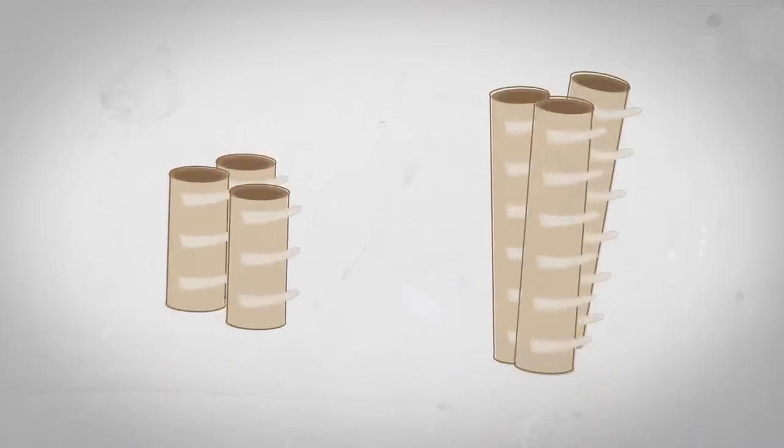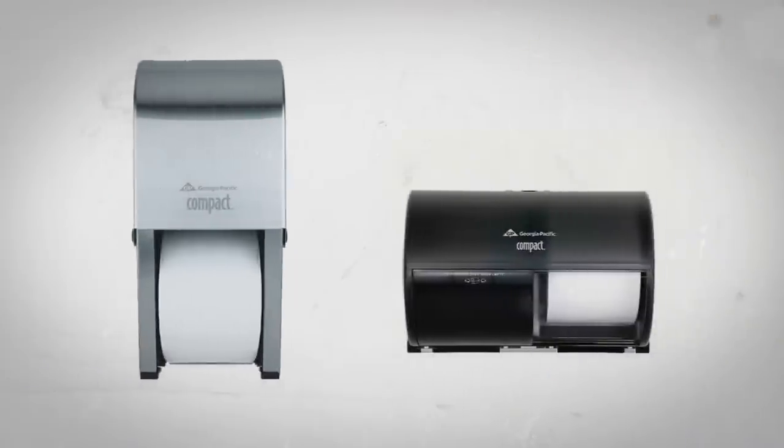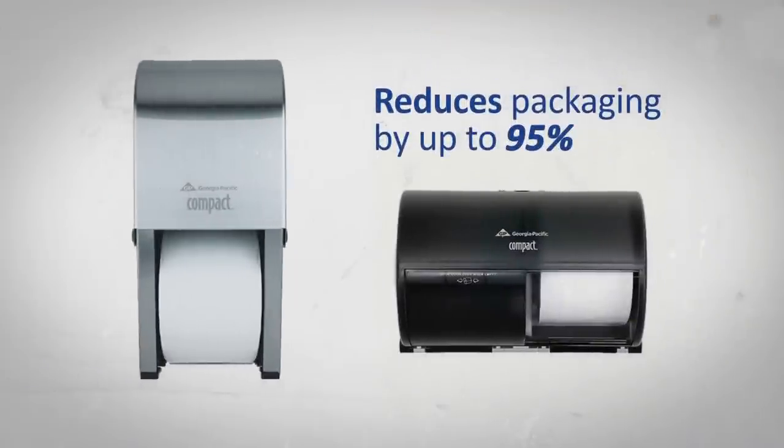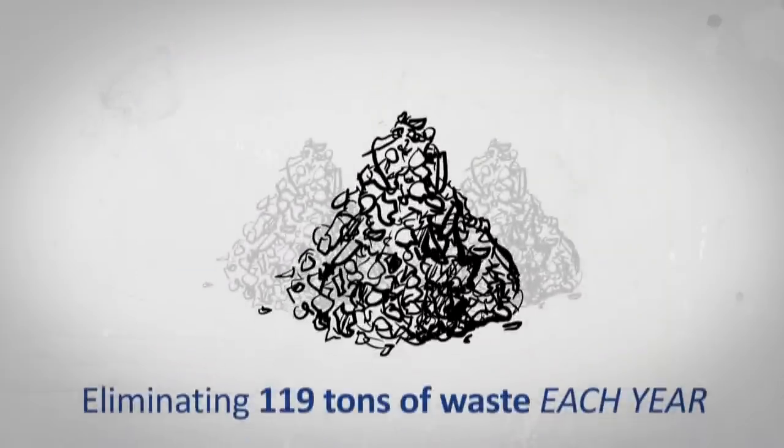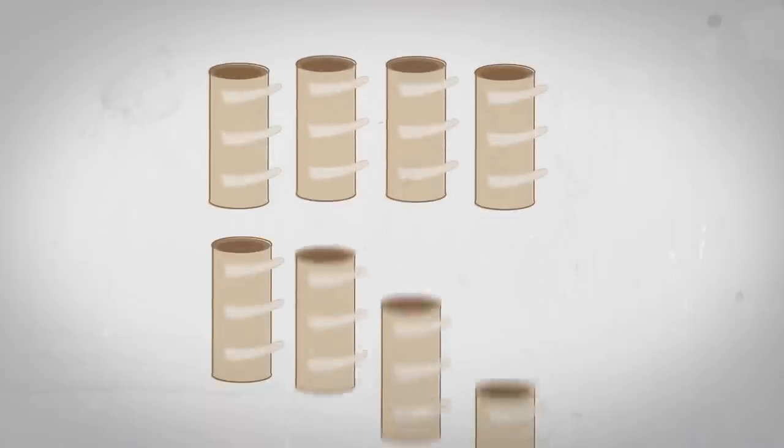And why stop there? When it comes to bathroom tissue, why not say goodbye to those wasteful cardboard rolls, tissue roll wraps, and outer cardboard cases? Georgia-Pacific coreless compact tissue reduces packaging by up to 95% compared to standard bath tissues, and is responsible for eliminating about 119 tons of waste each year.